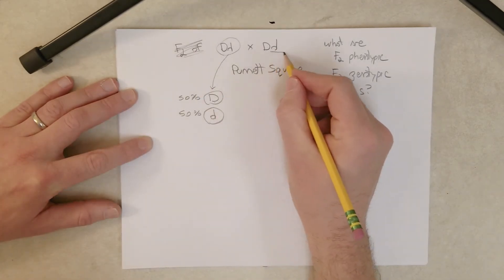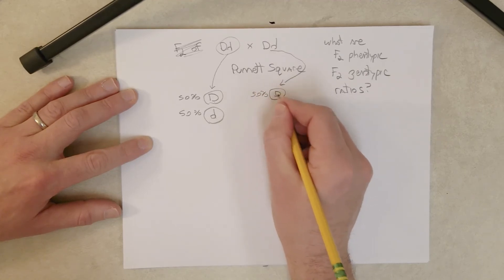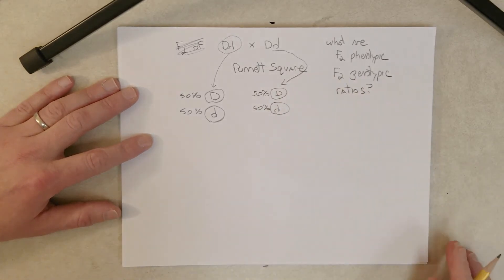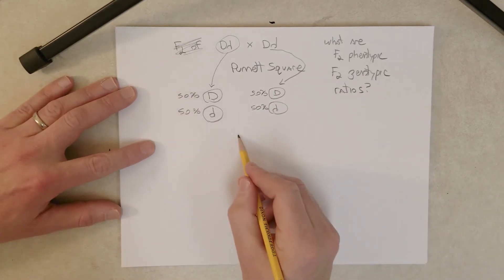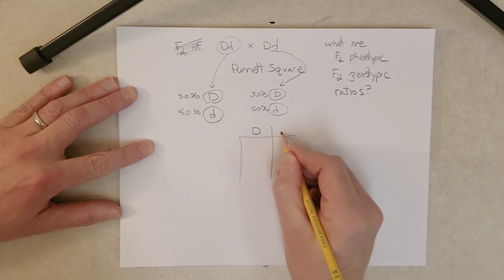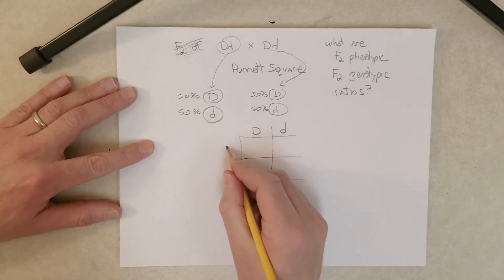Now the same thing for this parent: same genotype. It's going to produce the same type of gametes, which in plants is pollen leaves, the pollen or eggs. Now with the Punnett square, what you do is you make a little table here and you put the gamete genotypes of one parent along the tops of the columns.